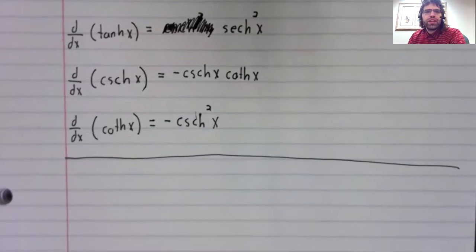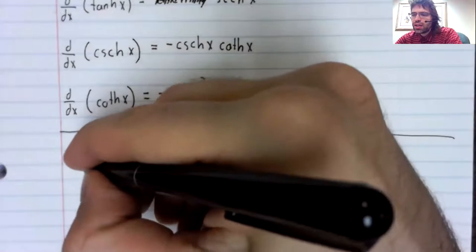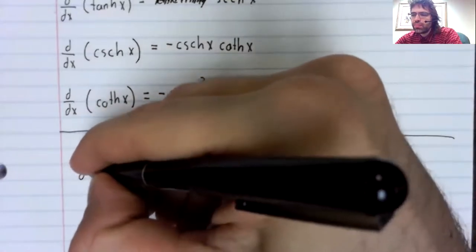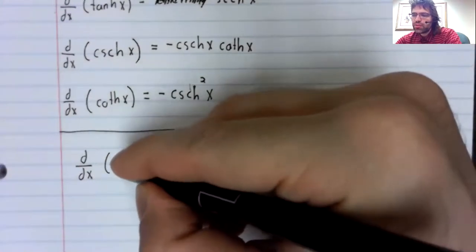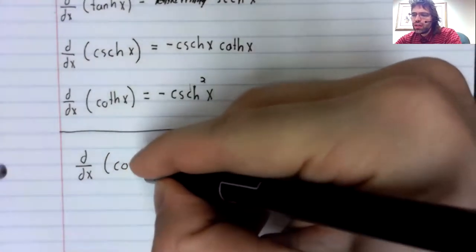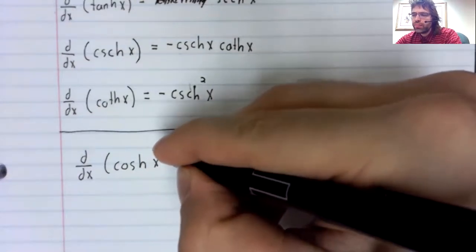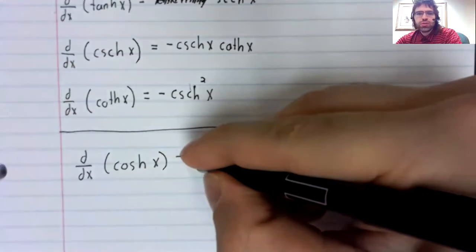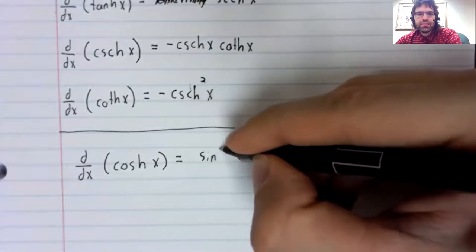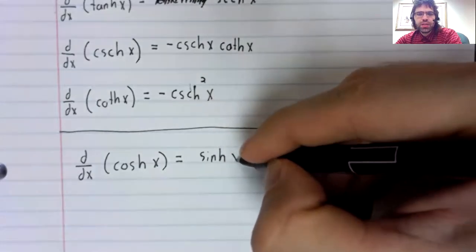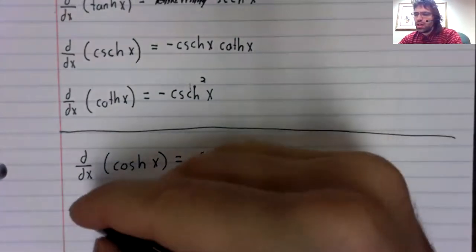These derivatives are similar to what you might expect, but not quite what you might expect. The derivative of the cosh, the hyperbolic cosine, is not the negative hyperbolic sine. It is the positive hyperbolic sine.